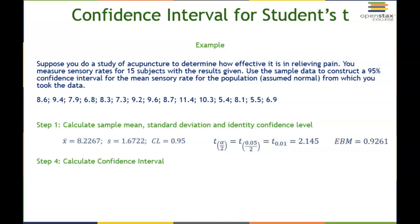Our fourth step is to calculate our actual confidence interval. The math hasn't changed, it's still x-bar minus the EBM and x-bar plus EBM. Our x-bar 8.2267 minus our EBM of 0.9261, we get the low boundary of 7.3006. For our high boundary, we add the two values together and we get 9.1528. So our confidence interval is 7.30 to 9.15, just rounding to two decimal places.